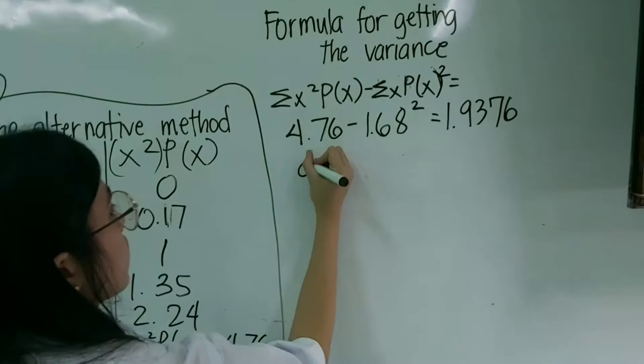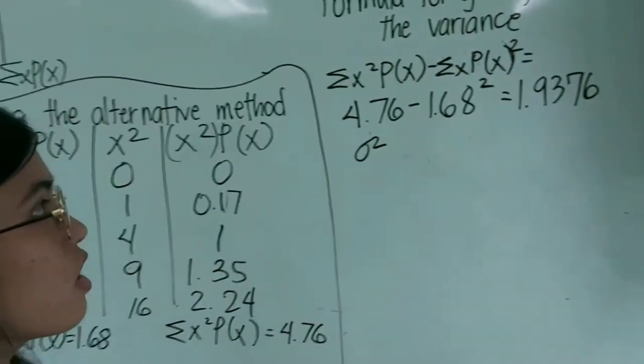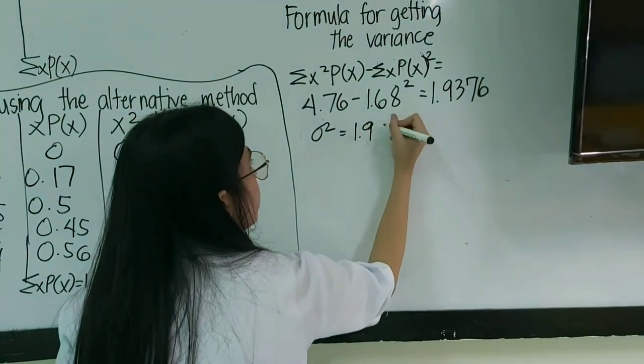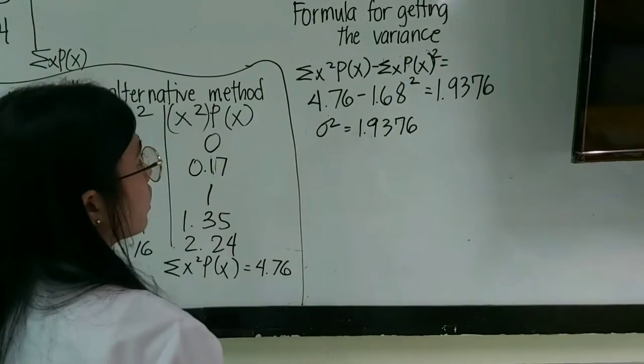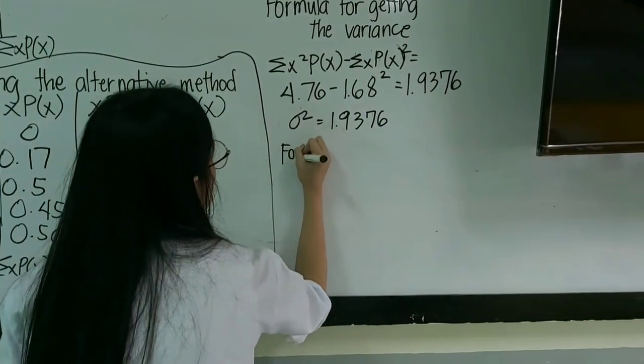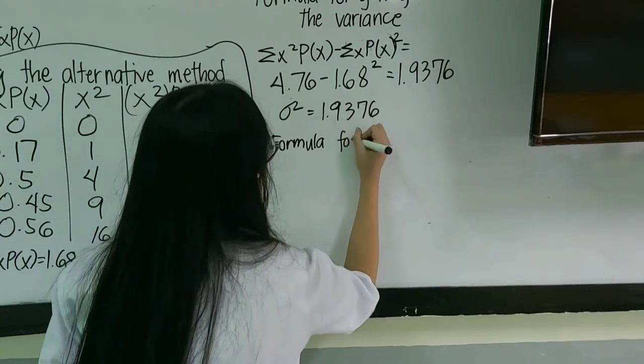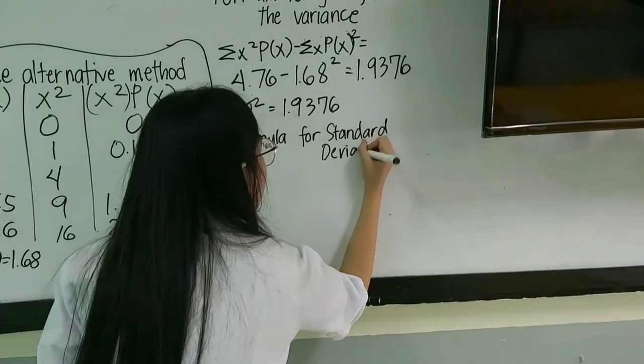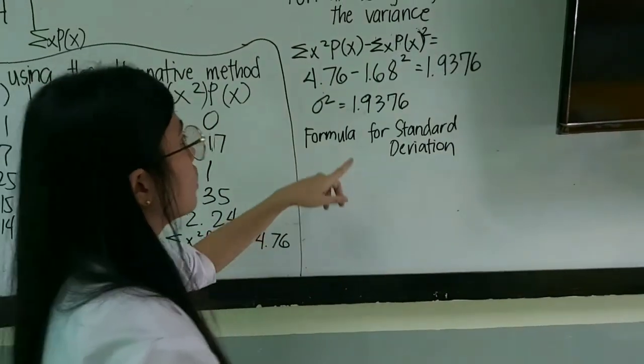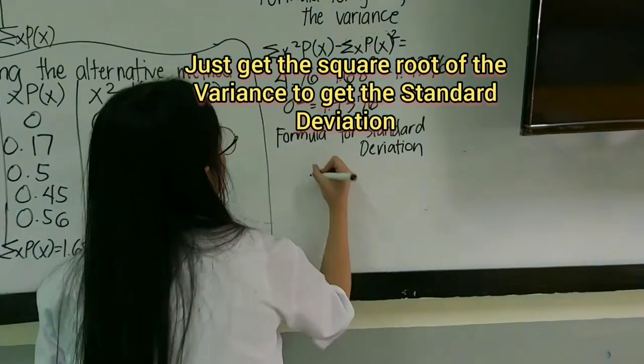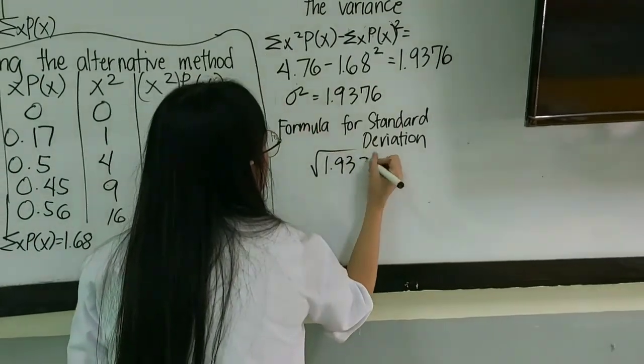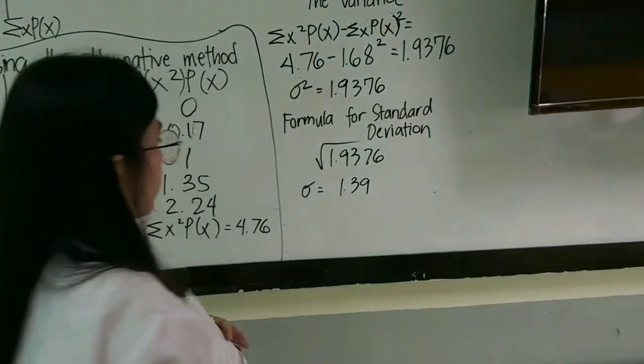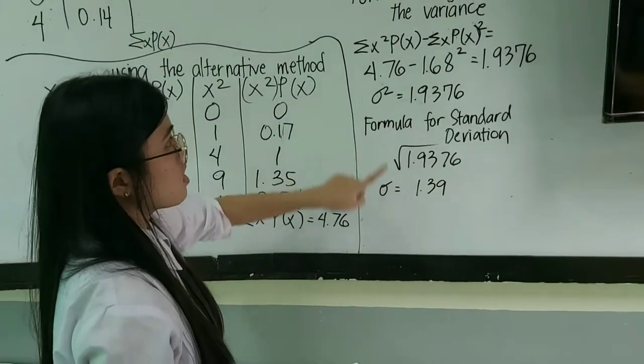Then, you're writing it as sigma squared, because the symbol for variance is sigma, or 1.9376. And to find the standard deviation, you'll use the formula. You will square root this number, 1.9376. It's equal to 1.392. This is the variance. This is the standard deviation.